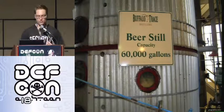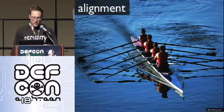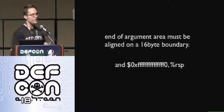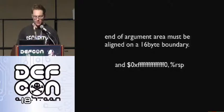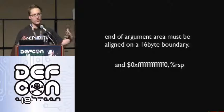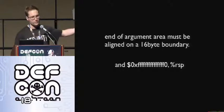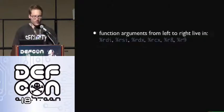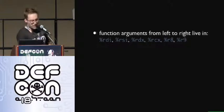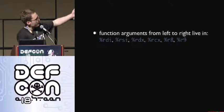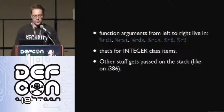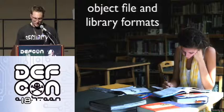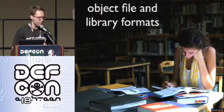Instead of reading all that stuff, we can distill it down to the main things we need to actually accomplish the function hooking. The first thing we need to worry about is alignment — specifically, the end of the argument area before you call a function has to be aligned on a 16-byte boundary. The compiler will generate code that never misaligns the stack, or you'll see instructions sprinkled throughout your code that align the stack pointer. We also need to care about calling convention: function arguments live in registers left to right — first argument in RDI, second in RSI, et cetera — but that's only for integer class items. Other stuff gets passed on the stack. Registers are either caller or callee saved.